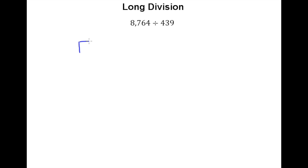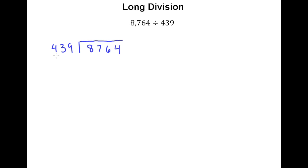So again we'll put our dividend 8,764 inside of our box and we'll put 439 outside. Now of course 439 does not go into 8, it does not go into 87, so clearly what we're considering here is the numbers 439 and 876.